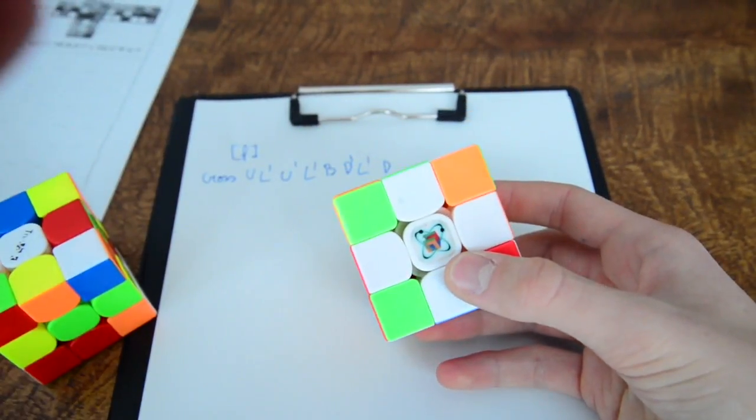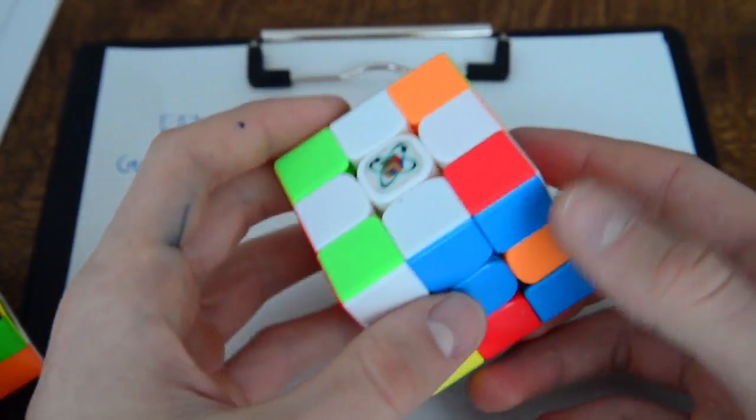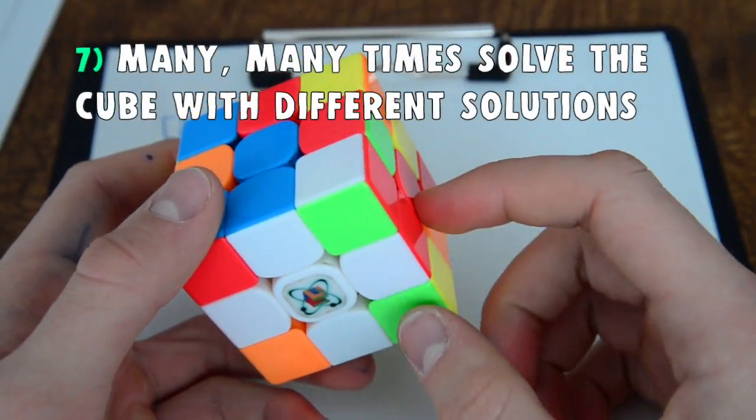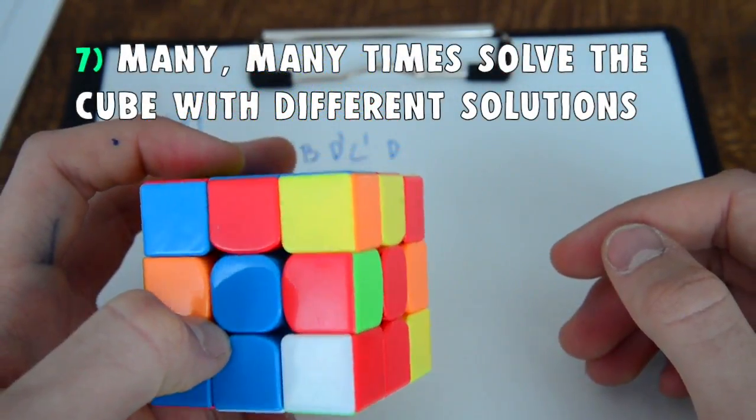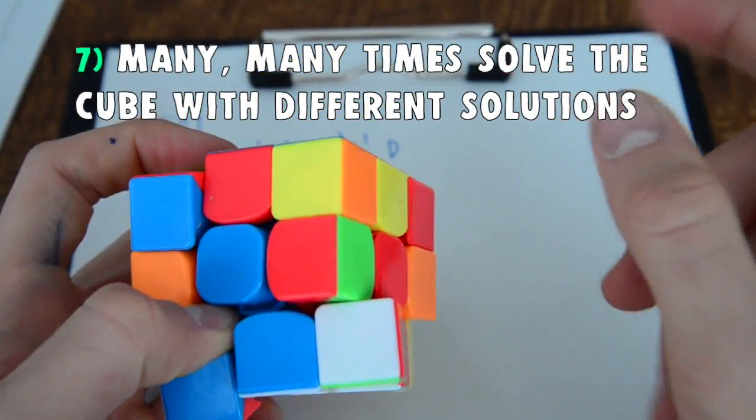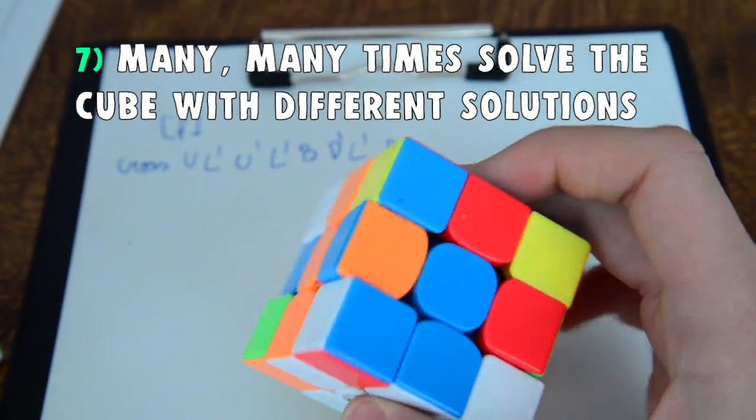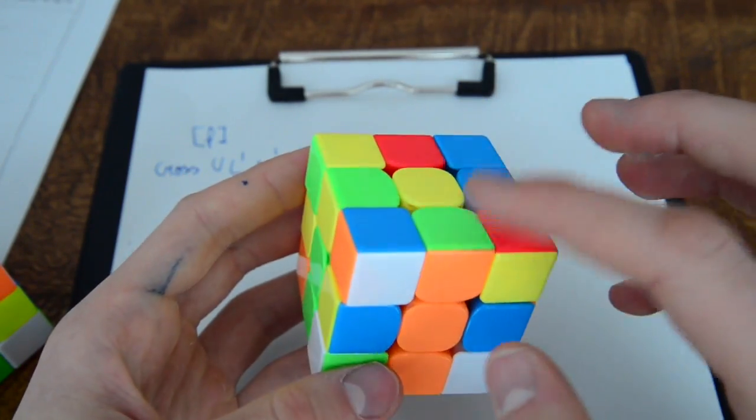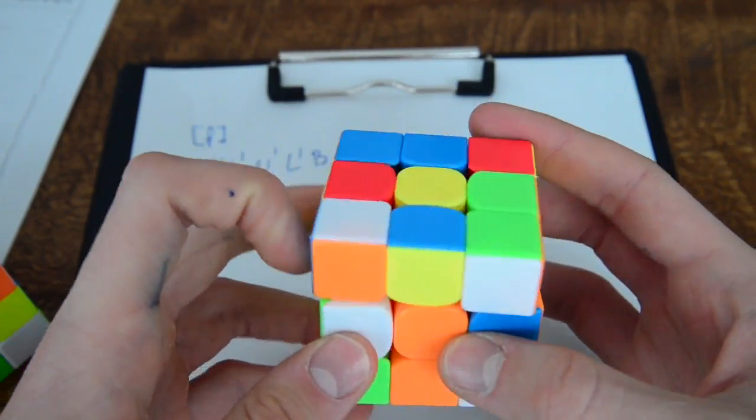As you can see the cross has been solved and now next tip that I have for you is solve the cube as many times as you need to find the one solution that you feel like is going to have the fewest moves.